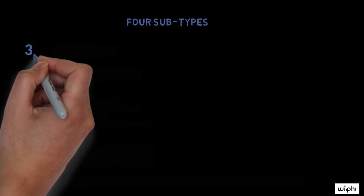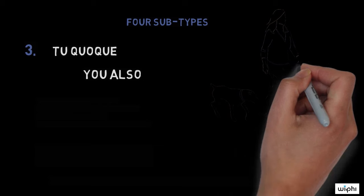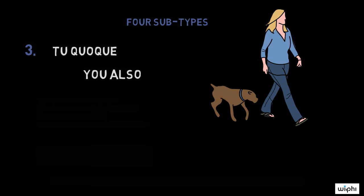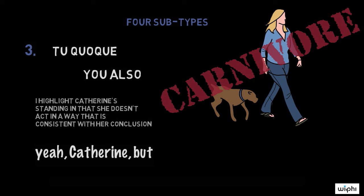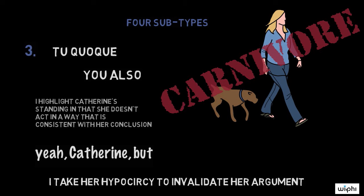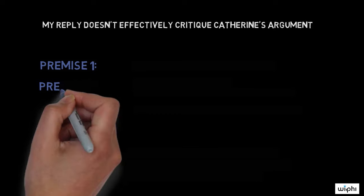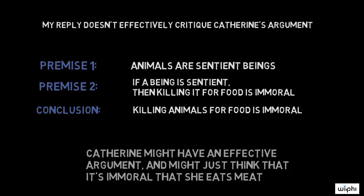The third type is called tu quoque, which roughly means 'you also.' Returning to Catherine's argument, suppose my reply were: 'Yeah, Catherine, but you eat meat, so you support the killing of animals for food — your argument must be invalid.' I highlight her hypocrisy, that she doesn't act consistently with her conclusion, and take that hypocrisy to invalidate her argument. But my reply doesn't effectively critique it. I haven't mentioned any problems with the premises or conclusion. Despite her purported hypocrisy, Catherine might have an effective argument and simply recognize that it is immoral that she eats meat.